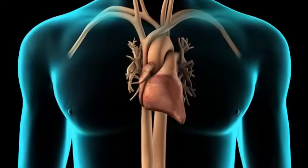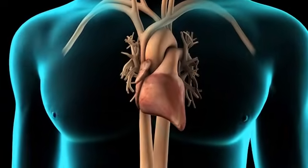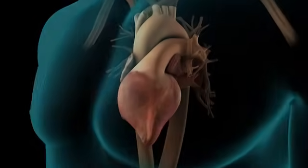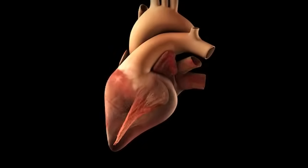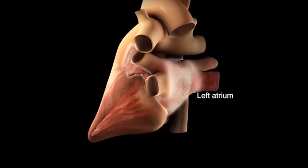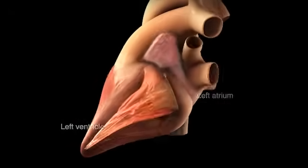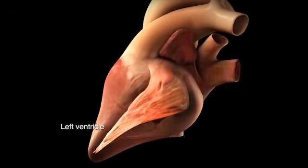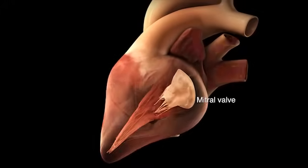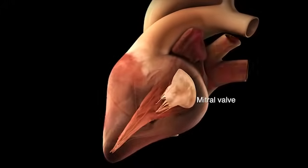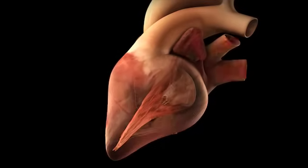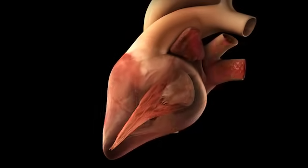The four valves in your heart keep your blood flowing forward. Located between your left atrium and left ventricle, your mitral valve controls the blood flow between these two chambers and stops blood from flowing back into the left atrium.